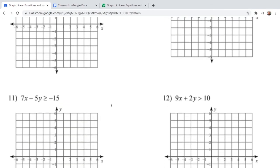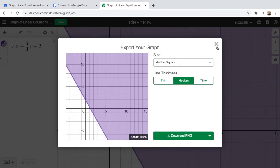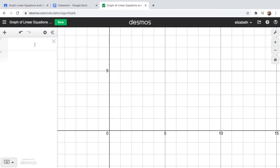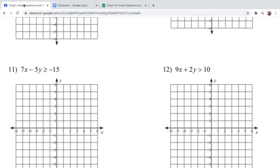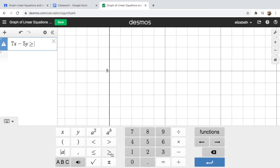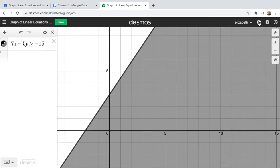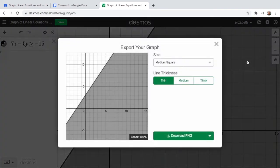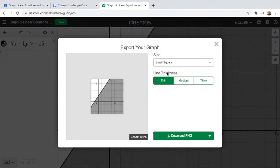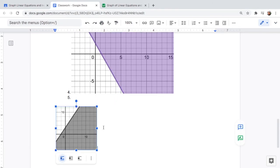So let us try another problem. So let's say we have 7x - 5y is greater than or equal to -15. And there you go. Click the arrow, export.